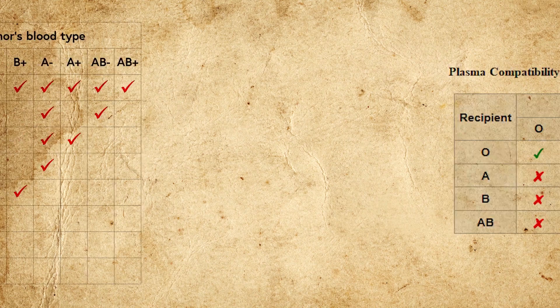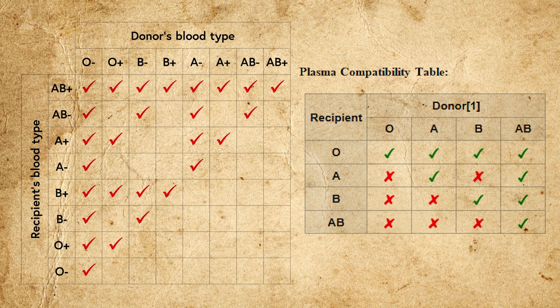If you're wondering about the full list of main blood types and plasma compatibilities, we have two charts where you'll note that they are more or less inverses of one another in terms of compatibilities between donor and recipient, for reasons previously explained.